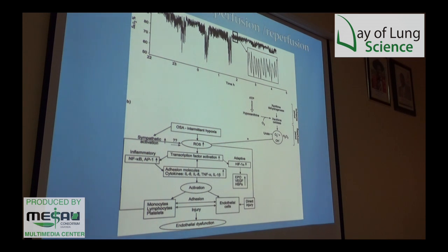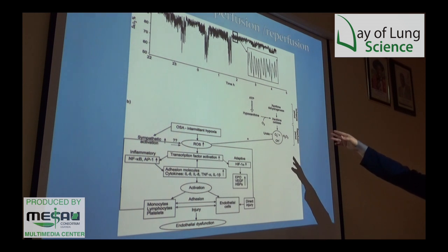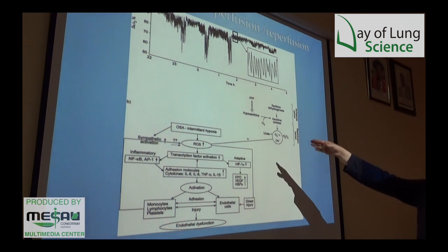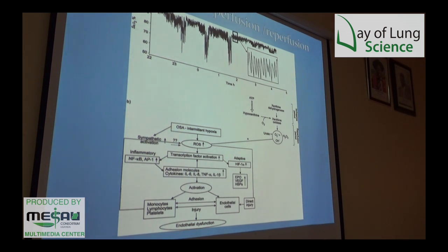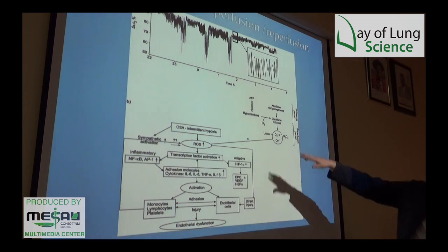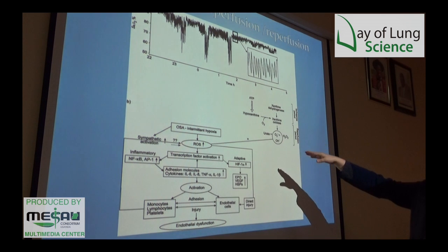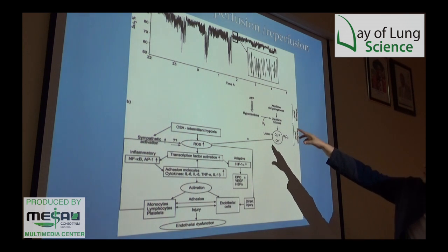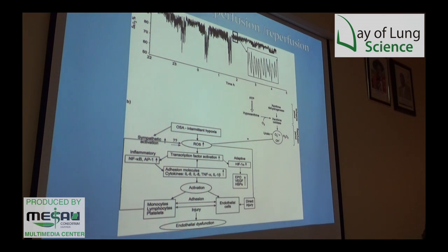On the right side is ATP generation. Within the mitochondria, that's the power source that gives us energy. When we can't use oxygen, we use other substances — xanthine dehydrogenase, which reacts with hypoxanthine to make xanthine oxidase.